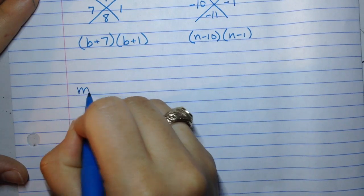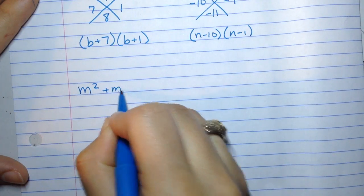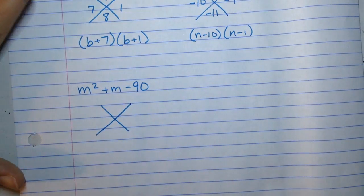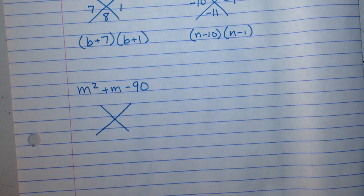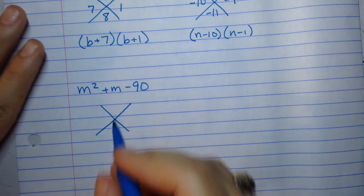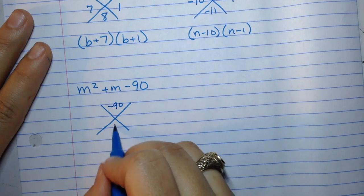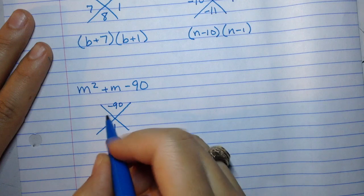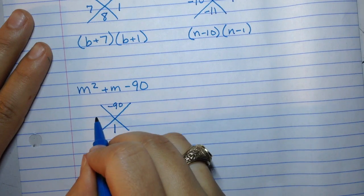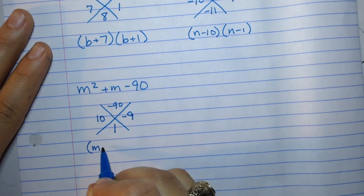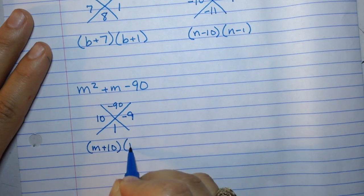Here's one more for you to try. We have m squared plus m minus 90. Give it a shot right now. Negative 90 should go on the top. Since there's an invisible number here, that invisible number is 1, which means the only thing that will work here is positive 10 and negative 9. So this trinomial will factor to (m plus 10)(m minus 9).